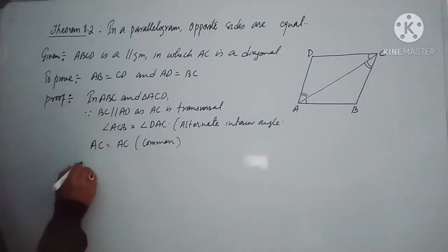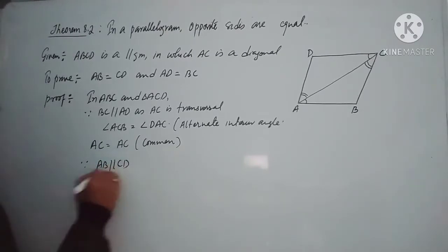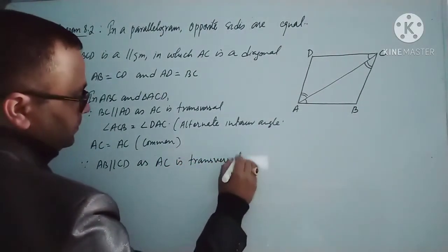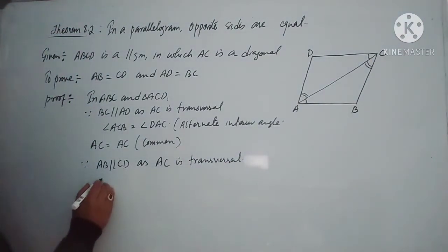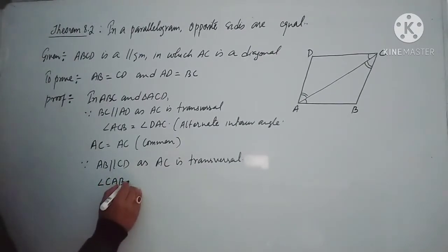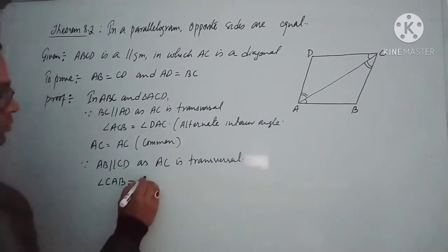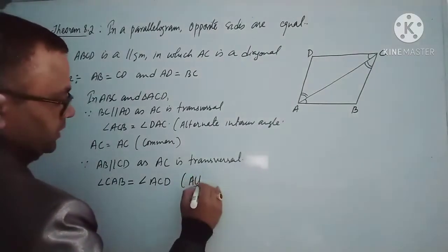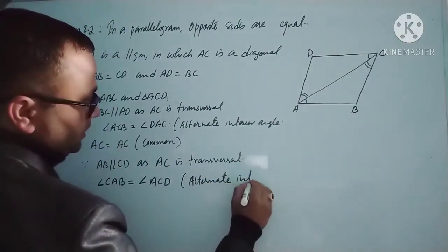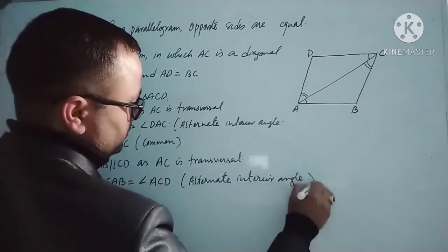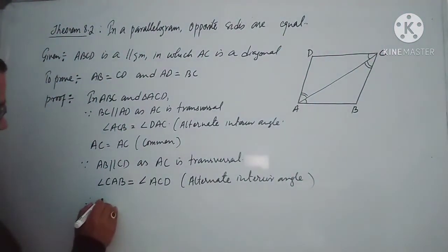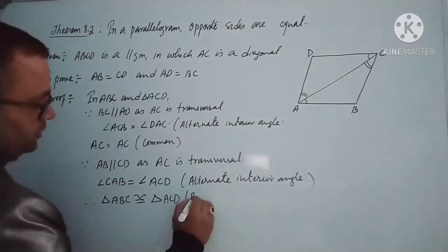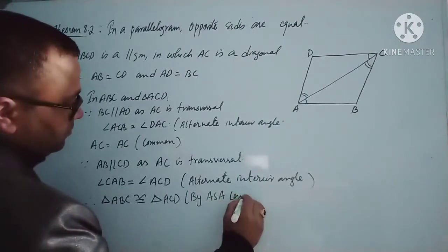Since AB is parallel to CD and AC is the transversal, we can write angle CAB equals angle ACD — it is an alternate interior angle. Therefore, triangle ABC is congruent to triangle ACD by angle-side-angle (ASA) congruency.